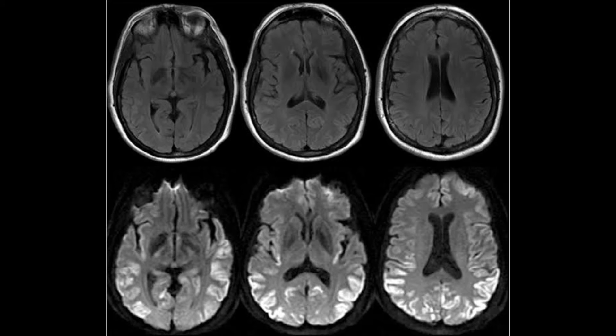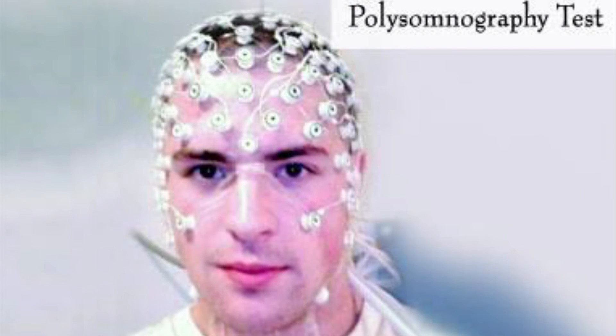Another type is Gerstmann-Sträussler-Scheinker disease, which is extremely rare. Many people have not heard of this — it occurs at an earlier age, typically around 40. There is also fatal insomnia, a hereditary disorder causing difficulty in sleeping.